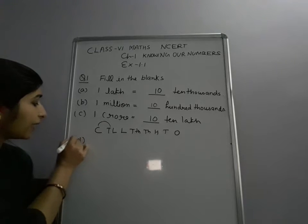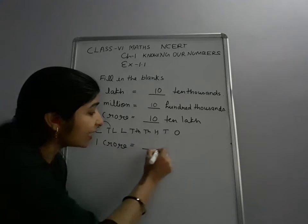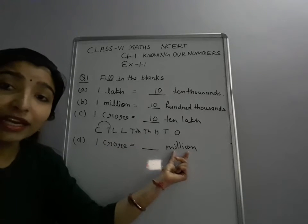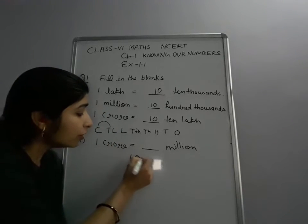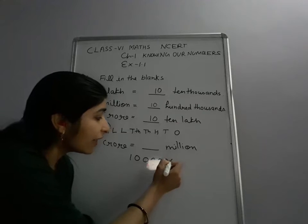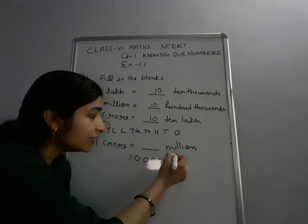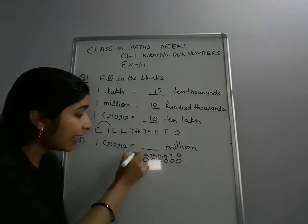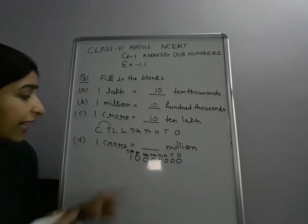Now D part: 1 crore is equal to dash million. This is Indian system but this comes under the international system. So there are two ways. First, you can write down crore — 1 crore is equal to 1 followed by 7 zeros. So: 1, tens, 100, 1000, 10,000, 100,000, and then million and 10 million. So you can say 1 crore is equal to 10 million.